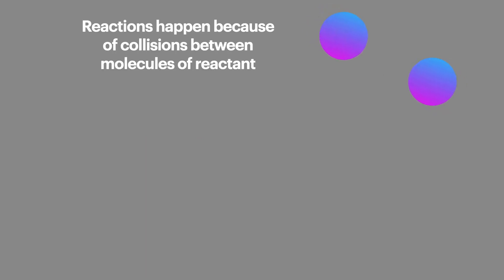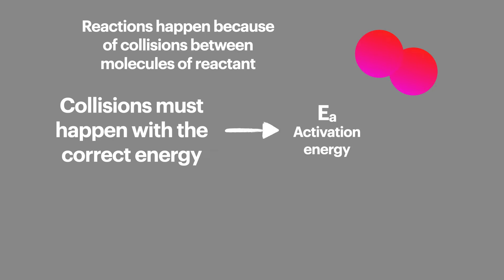Chemical reactions happen when molecules or particles of reactants collide. These collisions must happen with the correct amount of energy for a reaction to take place. We call this activation energy. If a collision happens without the particles having the activation energy then no reaction occurs and the particles bounce off each other.